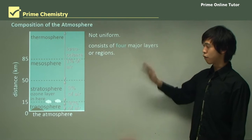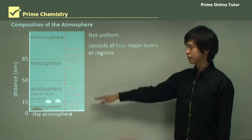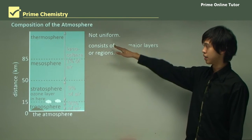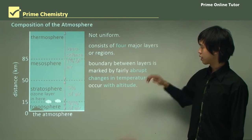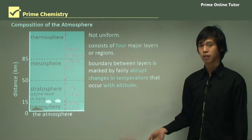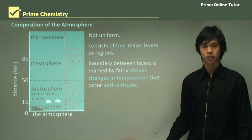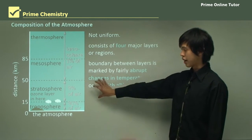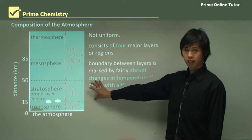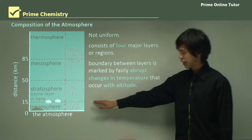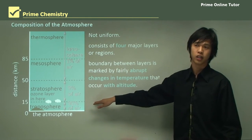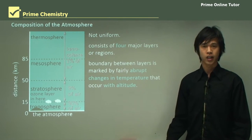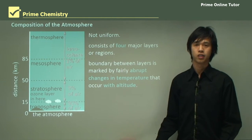There are four major regions: the troposphere, the stratosphere, the mesosphere, and the thermosphere. Each layer is separated by very abrupt changes in temperature — from the troposphere to the stratosphere, for example, there is a very abrupt change in temperature because of varying effects from solar radiation as well as the Earth's surface.